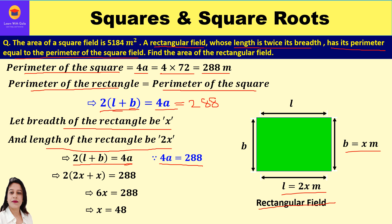We now solve the equation: 2x + x = 3x, and 3x × 2 = 6x. So 6x = 288, which gives x = 288 ÷ 6 = 48. The value of x is 48, which is our breadth. And twice of 48 gives us the length.